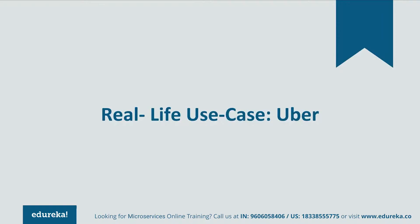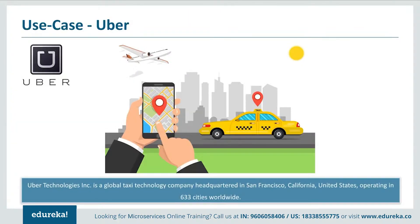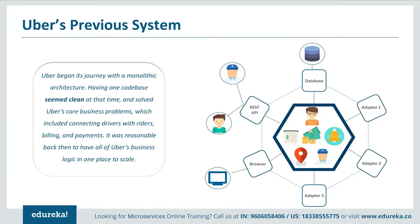Let's look into more of microservices and their implementation by using a real life use case of Uber. Uber Technologies is a global taxi technology company headquartered in San Francisco, United States, operating in 633 cities worldwide. Like many other startups, Uber also started its journey with a monolithic architecture for a single city.